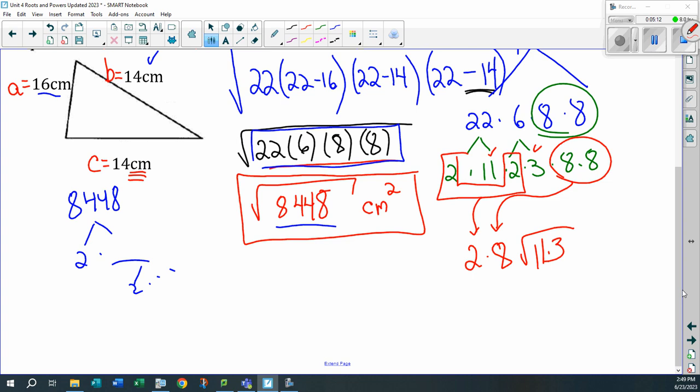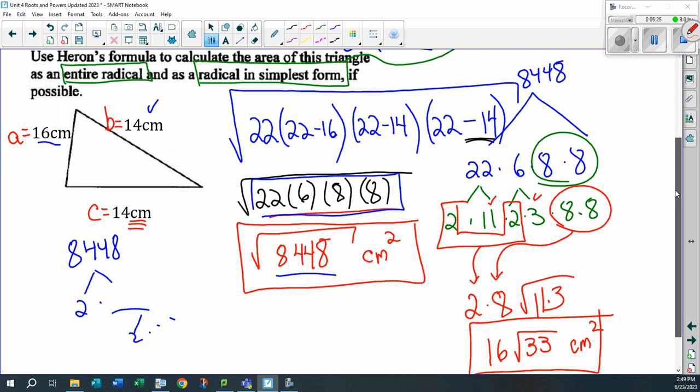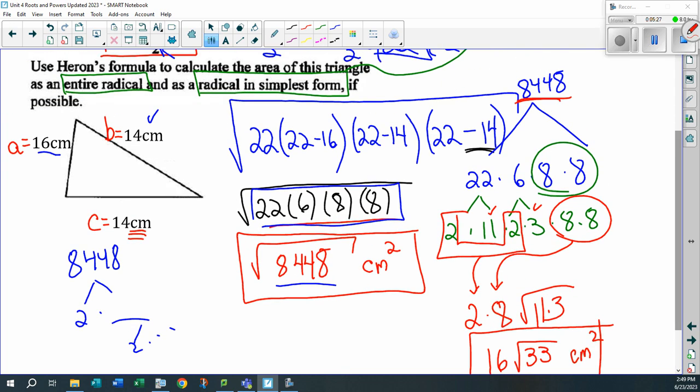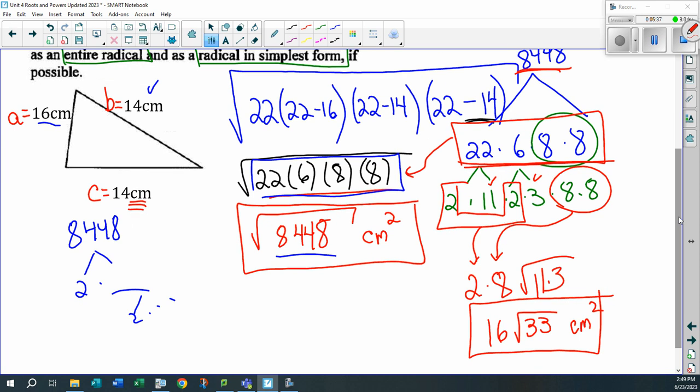Now check this out. 11 times 3 and 2 times 8. Well, 2 times 8 is 16. 11 times 3 is 33. That's 16 root 33 centimeters squared. See? You don't always have to go back to this original number. If they've got it broken down for you already because of the process of this question, why waste your time? That's a shortcut. You've got to be pretty smart and pretty quick to pick that up. But boy, will that save you a lot of time. Cool question, eh?